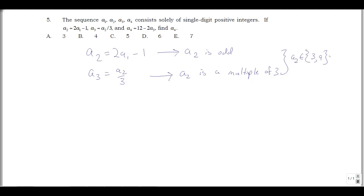So I'm just going to take those two possibilities and see what happens here. So let's maybe make a little chart, A1, A2, A3, A4. Let's just do our two possibilities, A2 is 3, A2 is 9.